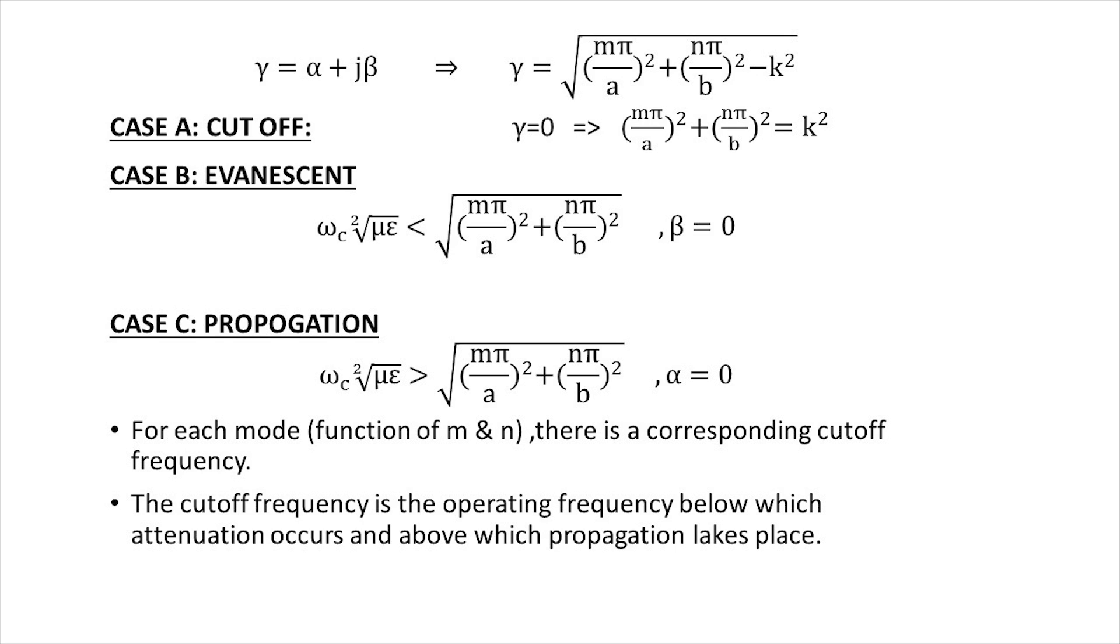Propagation: alpha equals to zero. This is the only case when propagation takes place because all field components will have the factor e raised to the power minus iota beta z.